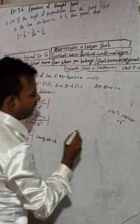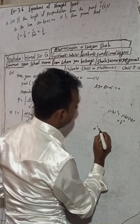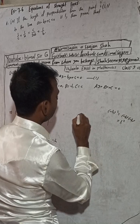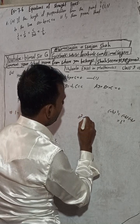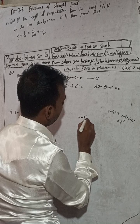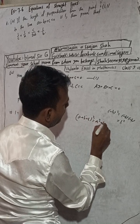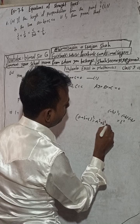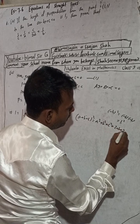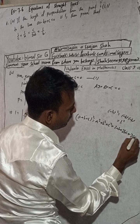Now we need to expand the right-hand side. Do you know the formula for (a plus b plus c) whole squared? The formula is: a² plus b² plus c² plus 2ab plus 2bc plus 2ca. We are going to apply this formula here.